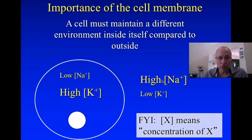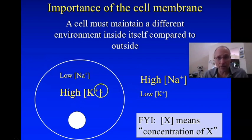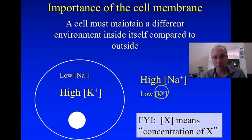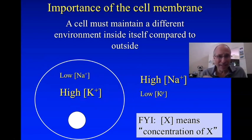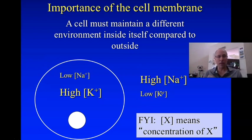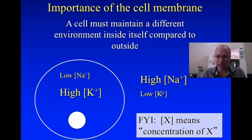Now if you look at potassium, it's exactly the opposite — about 10 times higher inside than outside, about 150 millimolar inside and about 10 to 140 millimolar outside. This is maintained, and this is why the membrane needs the energy. So why does maintaining this require so much energy?